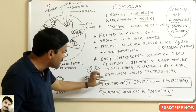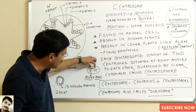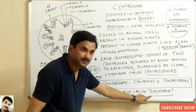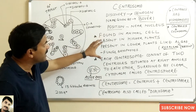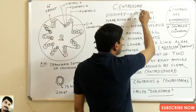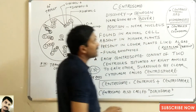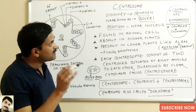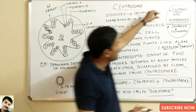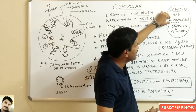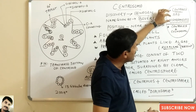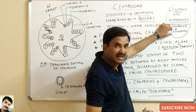Because the centrosome consists of two centrioles, we can also call it a diplosome. Inside the centrosome, centrioles are present, but centrioles are membraneless — they do not have any sort of membrane. Centrioles are also cylindrical structures.